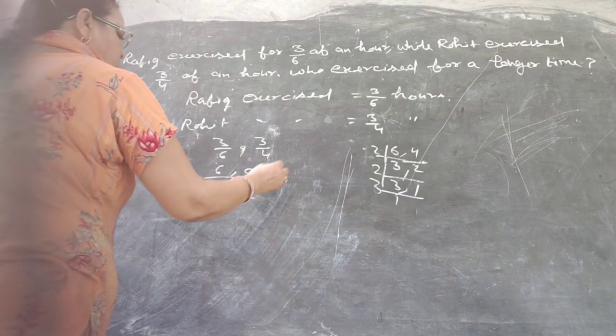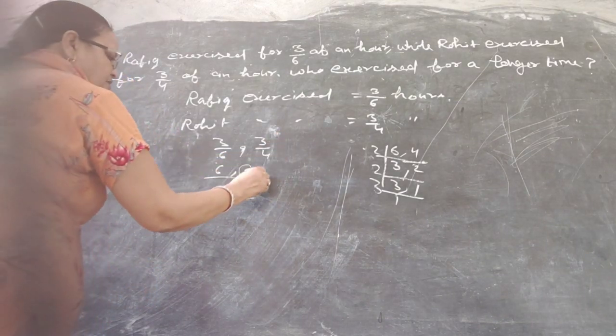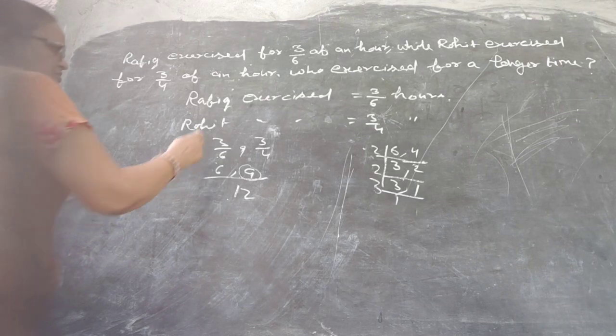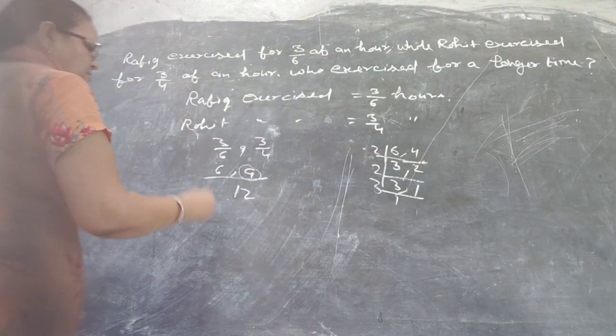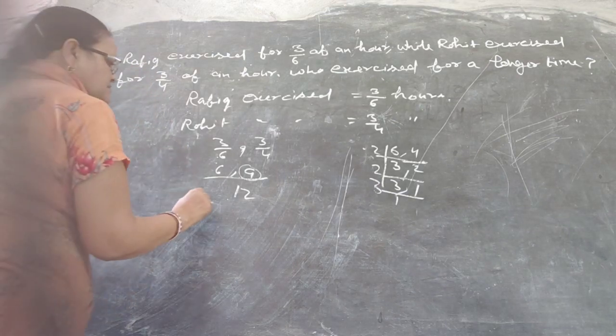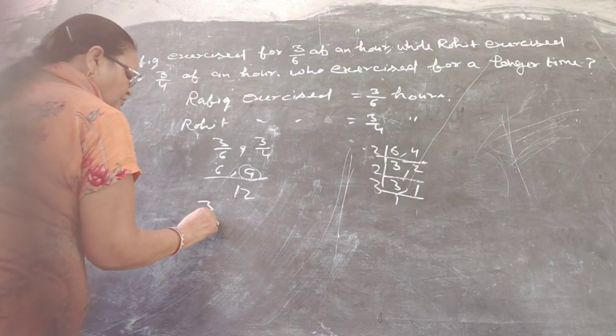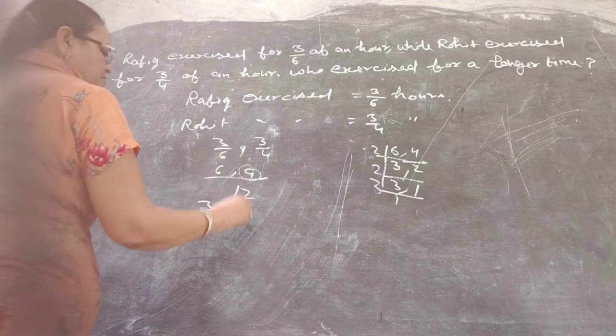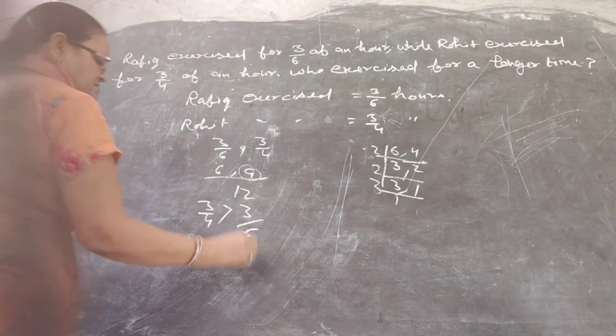Now I ask, which is greater? Rohi. Rohi exercised for a longer time. 3 by 4 is greater than 3 by 6.